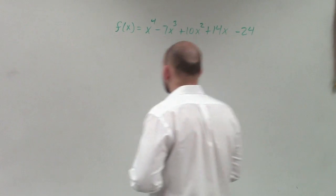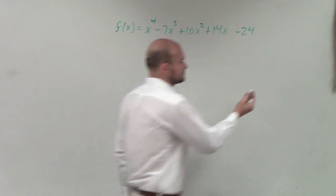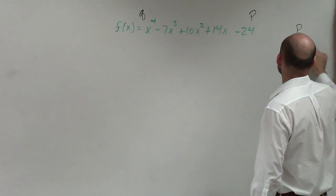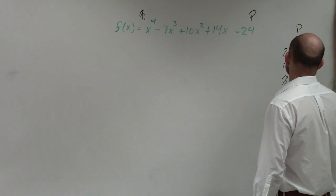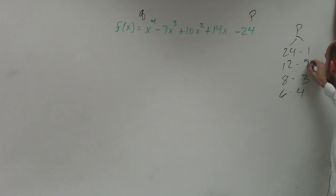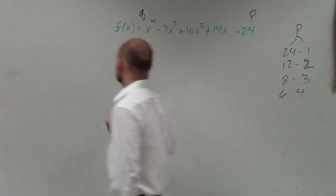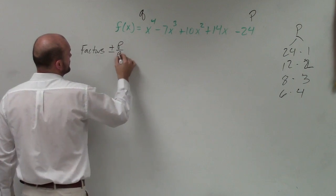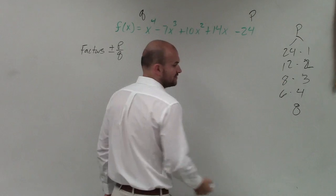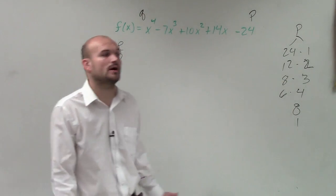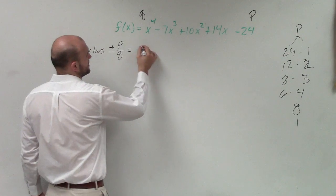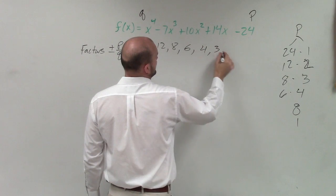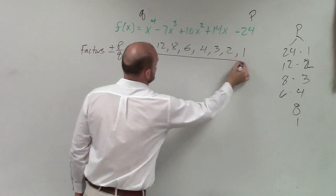Why do we even care to know it? Why are we going to be using it? So let's first do the p over q. So p is 24. We have 24 times 1, 12 times 2, 8 times 3, and 6 times 4.